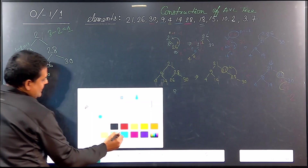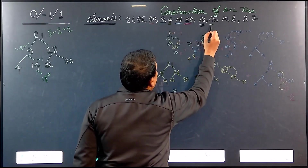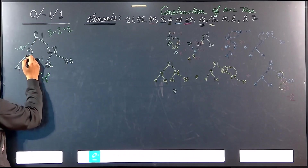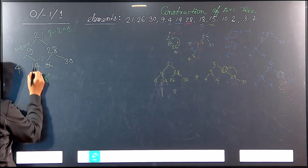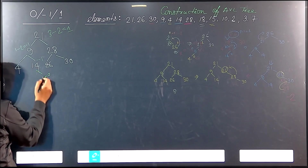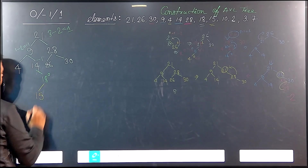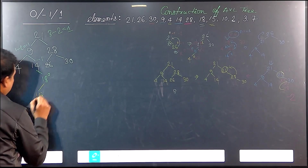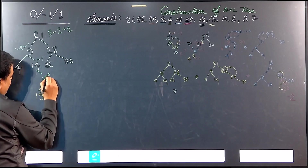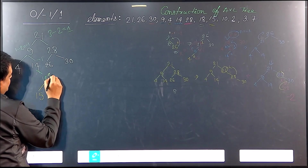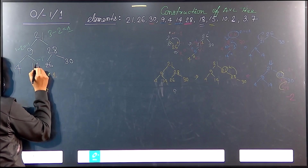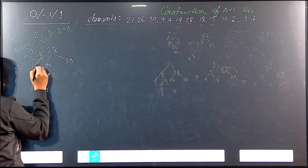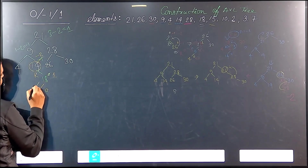We will insert another element — that is 15. So 15 will be inserted: it is less than 21, greater than 14, and less than 18, so 15 goes between 14 and 18. Now we calculate the balance factor. For 15 it is 0, for 14 it is 1 minus 0 = 1, and for the node above it is 0 minus 2 = minus 2. So the problem is here — that is a right-left imbalance.